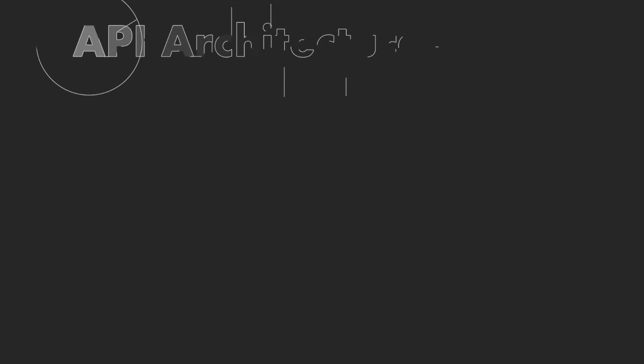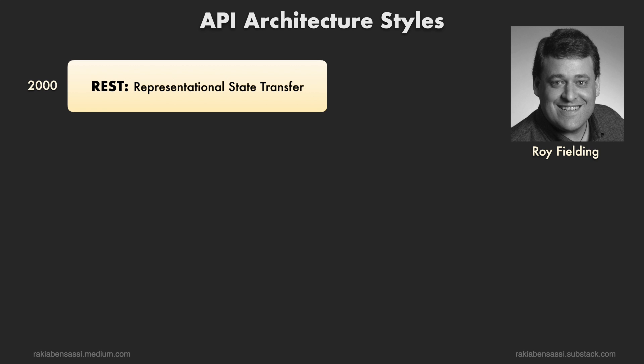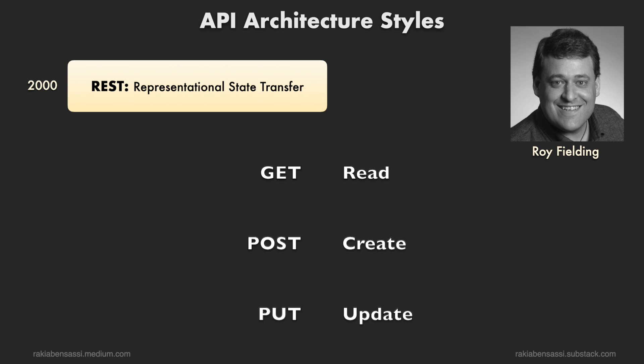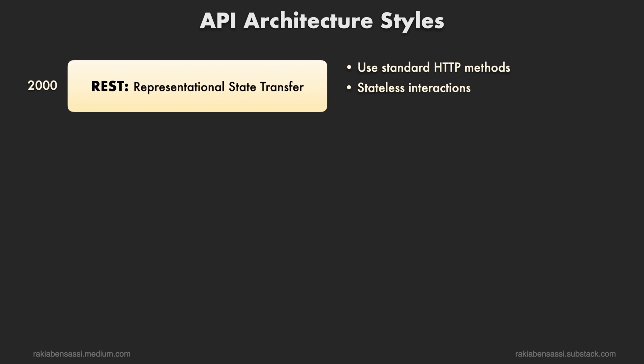In the next session, we'll explore the most popular styles. REST — Representational State Transfer — was introduced by computer scientist Roy Fielding in 2000. REST emphasizes statelessness, cacheability, and the uniform interface. Its beauty lies in simplicity and the ability to leverage existing HTTP methods — GET, POST, PUT, DELETE — for CRUD: create, read, update, delete operations. When you browse the web, you are engaging with RESTful services — silent, yet omnipresent. The key characteristics of REST are: use of standard HTTP methods, stateless interactions, and resource-based — everything is a resource.